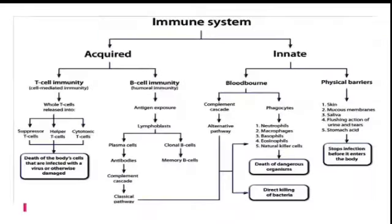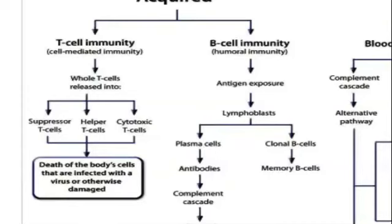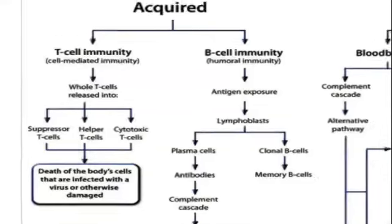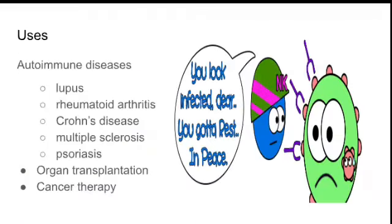In the immune system, acquired immunity happens by T-cell mediated immunity, that is cell-mediated immunity, and B-cell immunity, that is humoral immunity. Both types of immunity work together for the harmony of our body function. A drug may block T-cell or B-cell immunity — especially immunosuppressants. So what are the uses of immunosuppressants? We give these drugs to decrease the immune response.